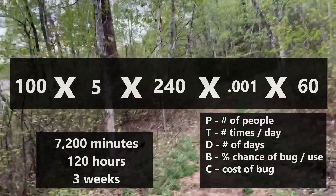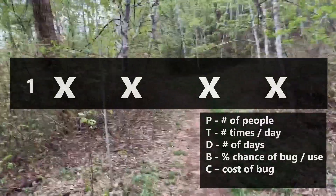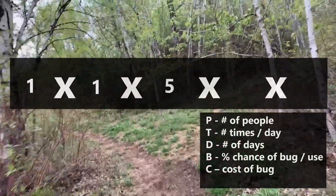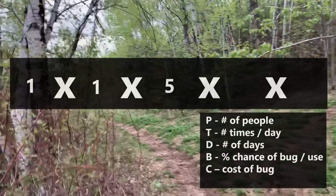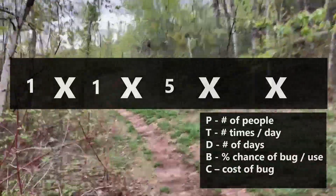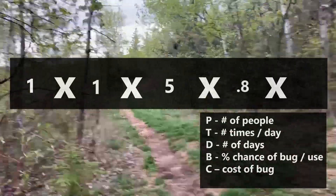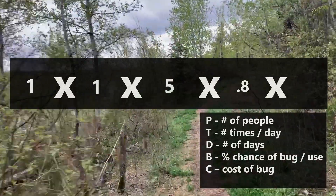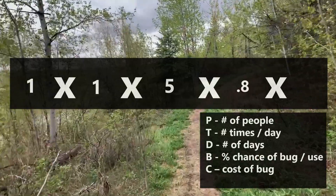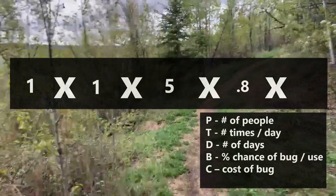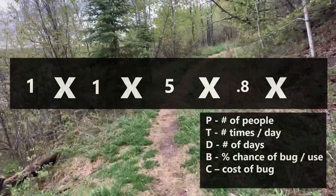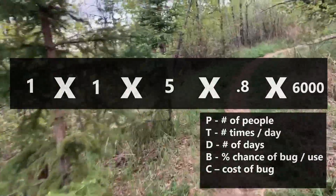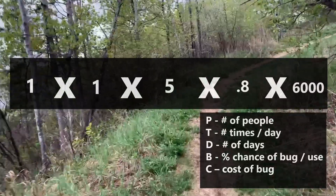Going back to the disk layout example: one person, doing it no more than once per day, five times over the entire project. But it's really tricky, so they have an 80% chance of introducing a bug when they do it. And these bugs are hard — something hidden inside the way the game performs — very difficult to find after the fact. It takes around 100 hours, a couple of people working for a whole week, to figure out what's going on.